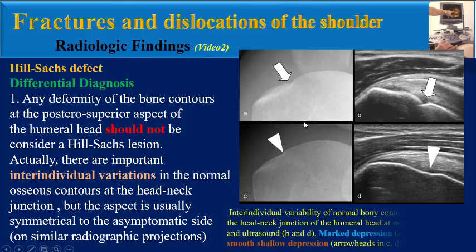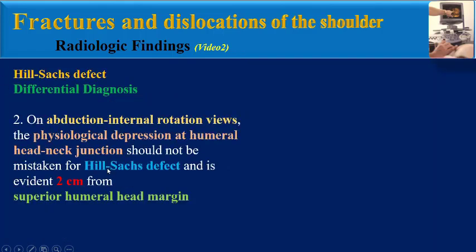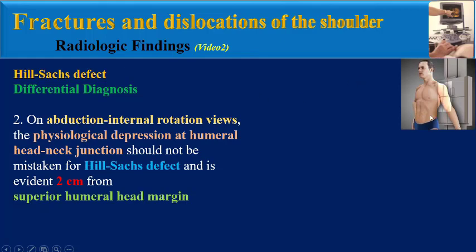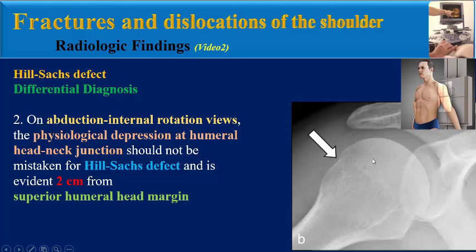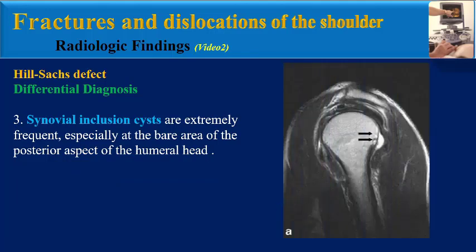These are two examples of inter-individual variability of the normal bone contours at the head-neck junction of the humeral head in radiography and sonography. These two images show a variant with marked depression and these two show a variant with a smooth shallow depression. Another differential diagnosis on abduction internal rotation views: the physiological depression at the humeral head-neck junction should not be mistaken for a Heel Socks defect, which is evident 2 cm below the superior humeral head margin.